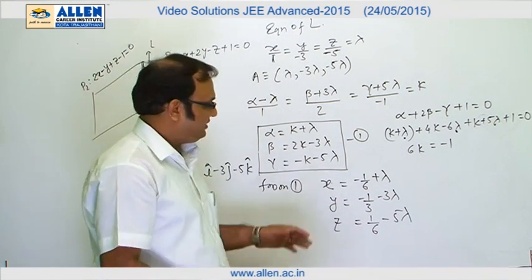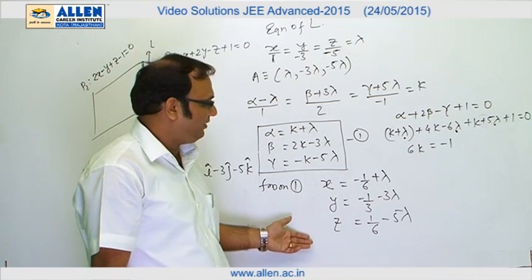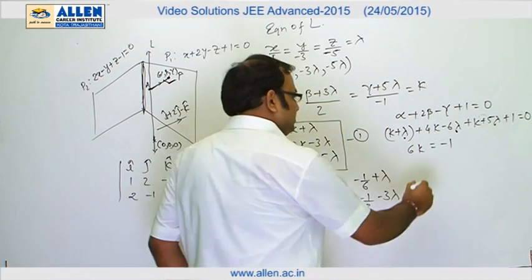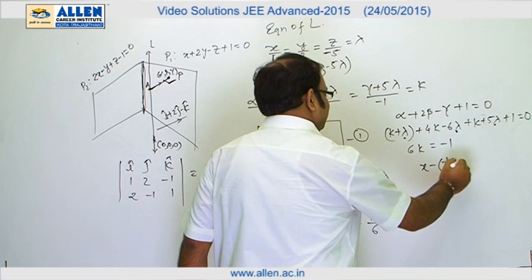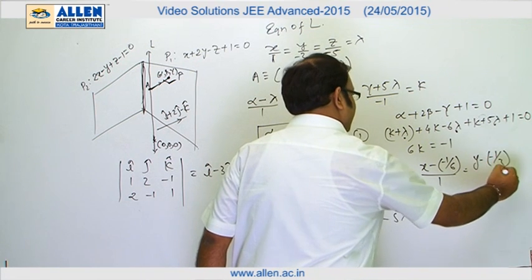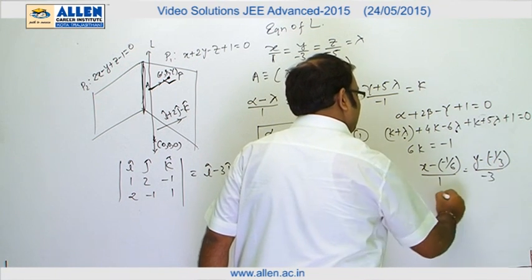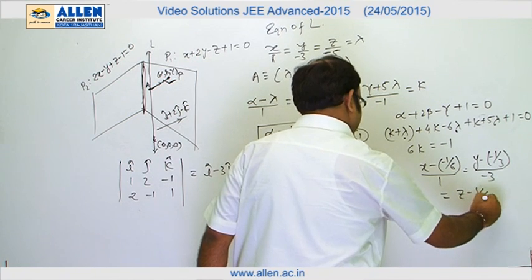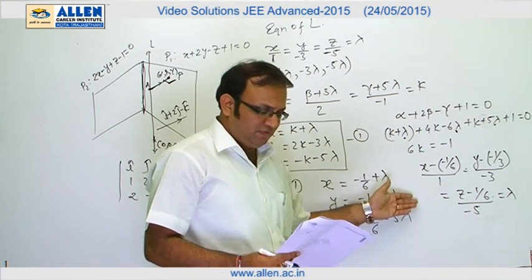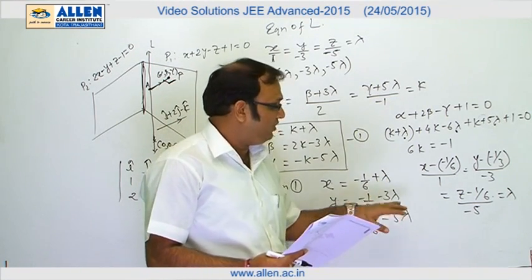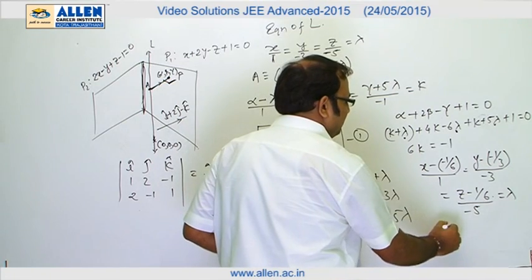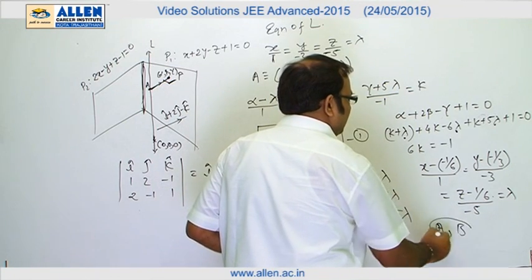This is the equation of a line. Writing it in symmetric form: (x + 1/6)/1 = (y + 1/3)/(−3) = (z − 1/6)/(−5) = λ. We now have the equation of the locus, and by checking the options, A and B are the correct answers to this question.